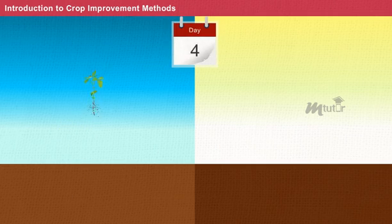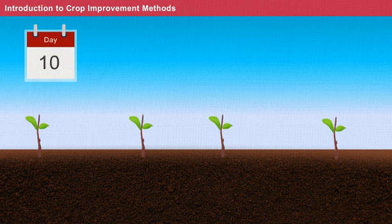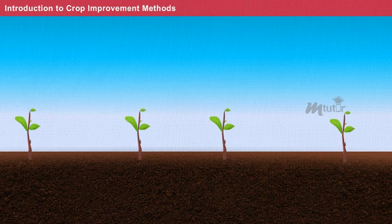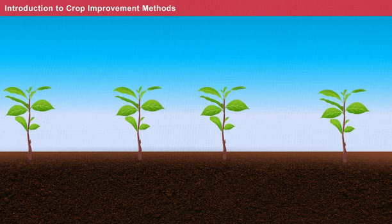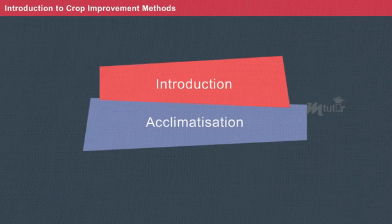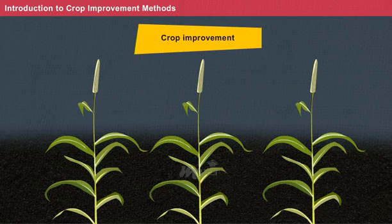Likewise, each plant requires time to adapt to a new environment. Initially, when a crop is introduced in a new place, its growth proceeds at a slow pace. Over a period of time, it gets adapted to the new conditions and expresses stable growth. Later, it is considered suitable to be domesticated in that region. The stages of introduction, acclimatization, and domestication are a part of the crop improvement process.